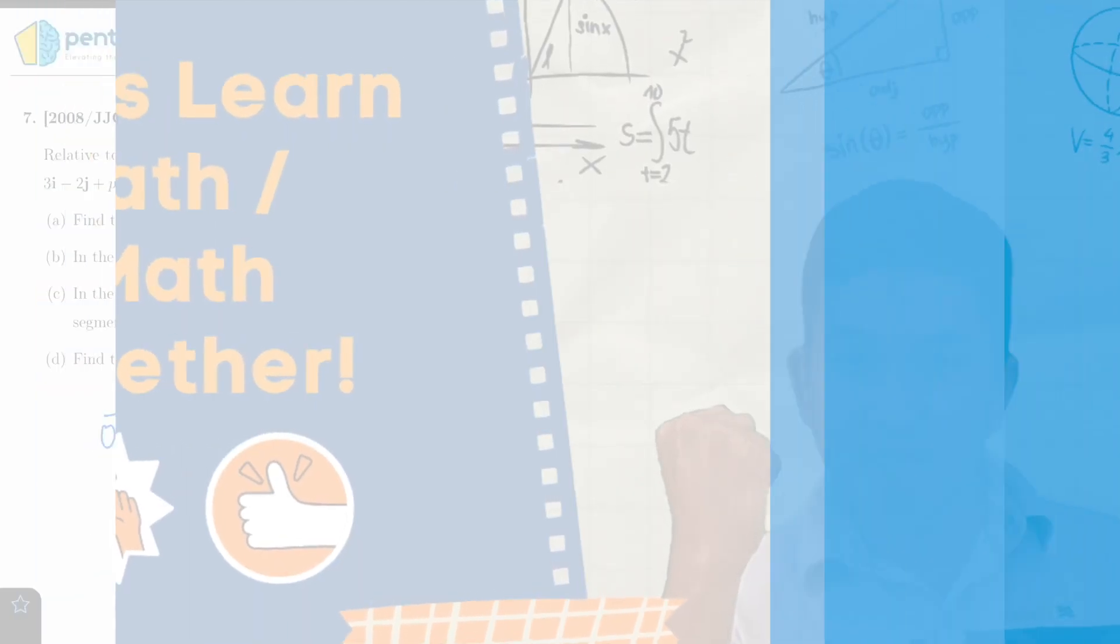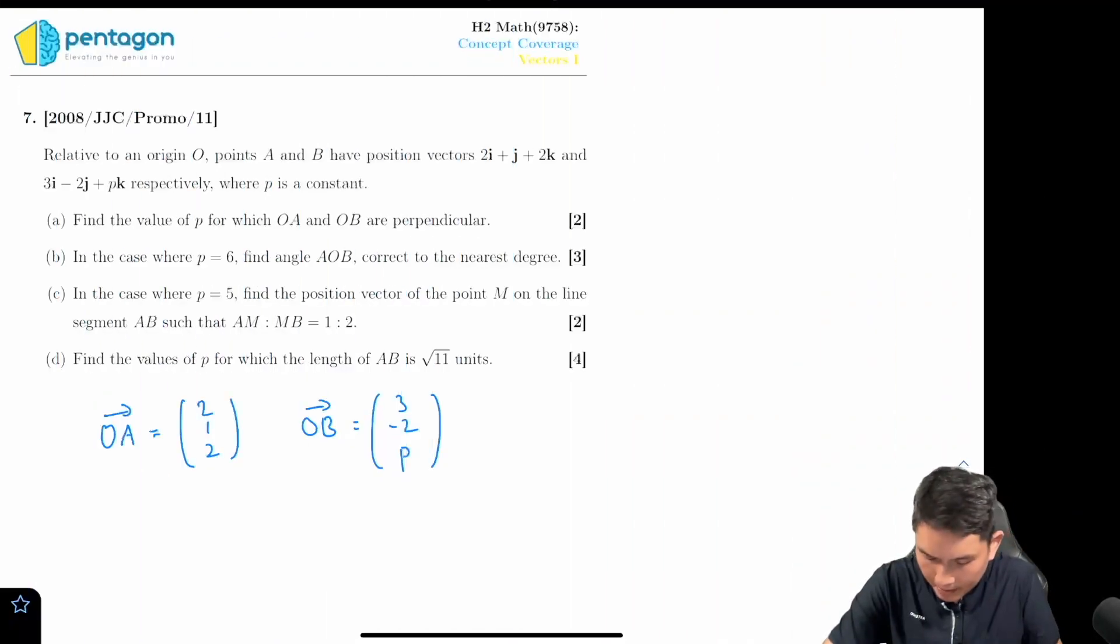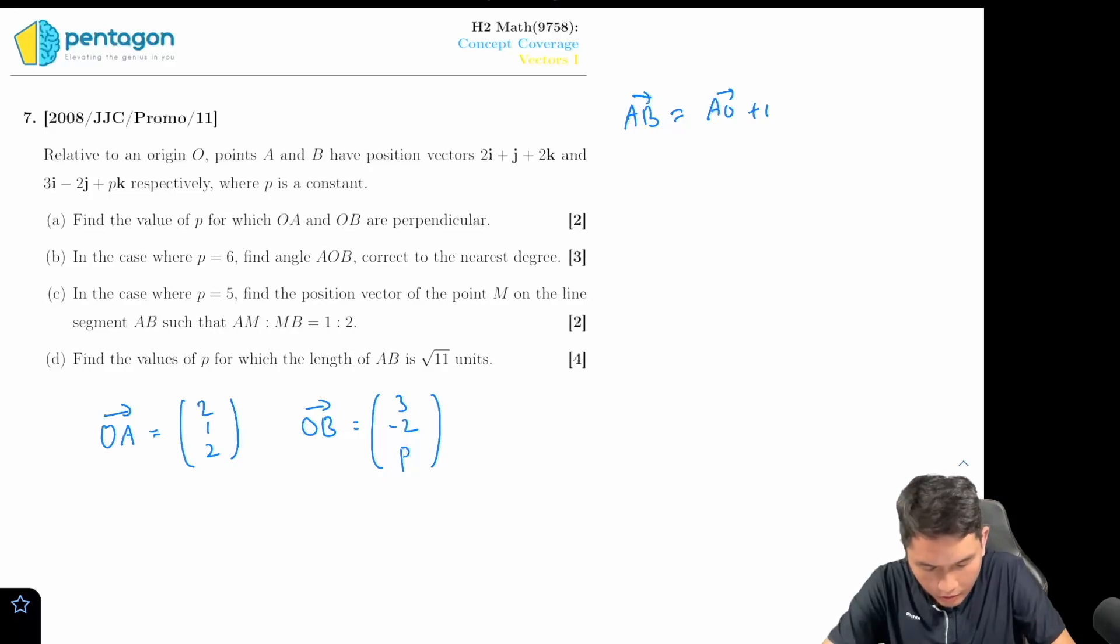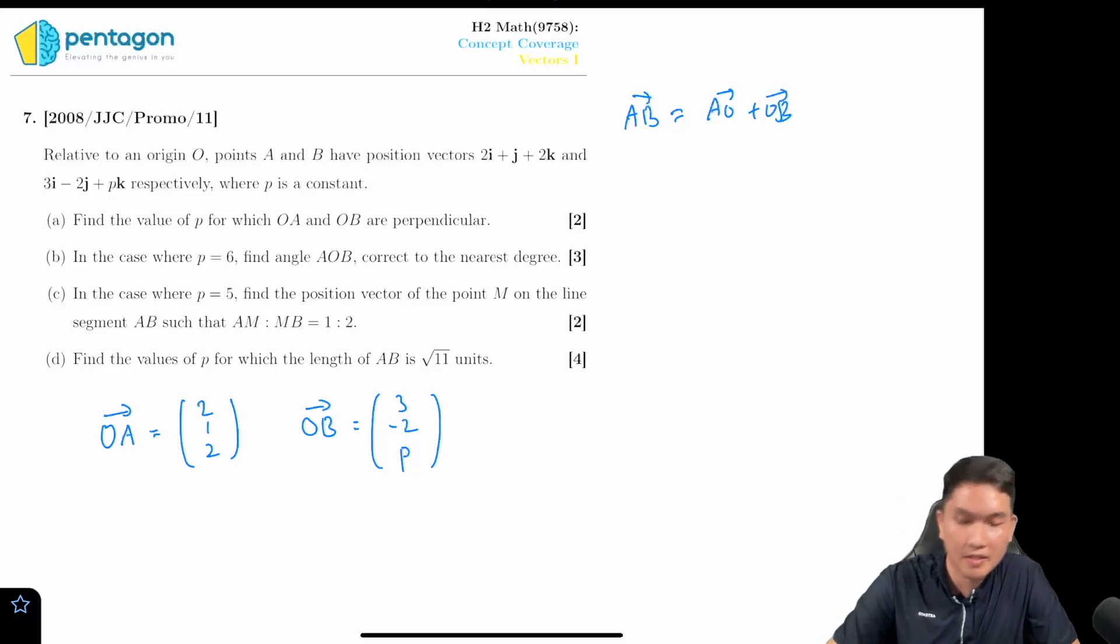Welcome back to part d. In part d we have to find the value of p for which AB is going to be square root 11 units. So first of all I can find what is AB. AB is going to be AO plus OB. Remember resultant vectors. So AO is the opposite of OA.